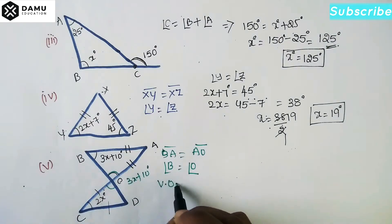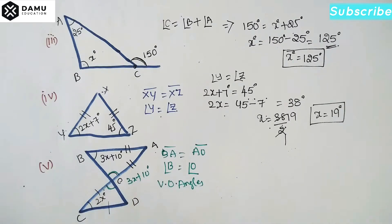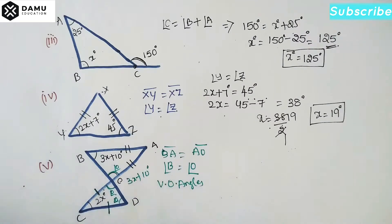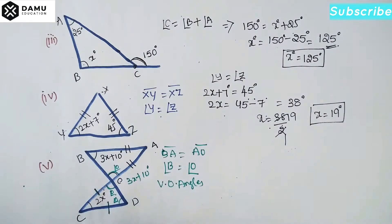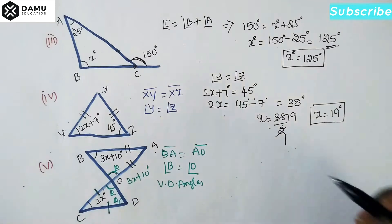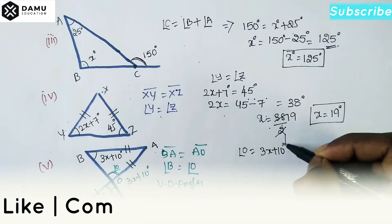Because of vertically opposite angles, here angle O is also 3X plus 10 degrees. These two sides are equal, so the opposite angles are also equal. Therefore angle O equals 3X plus 10 degrees.